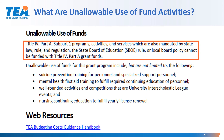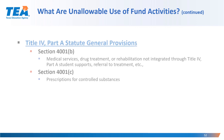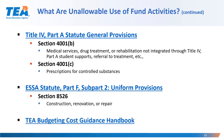You may find additional information in the TEA Budgeting Cost Guidance Handbook on unallowable use of funds and activities. There are a couple of statute general provisions that are new to your assurances and consolidated application guidelines this year, as well as the ESA statute Part F, which states that construction, renovation, and repair may not be activities that can be supported with Title IV Part A funds. These are requirements that have always been in statute but have been added through an errata for Title IV Part A programs. You can find additional information in the Budgeting Cost Guidance Handbook.